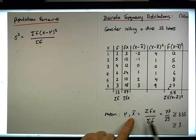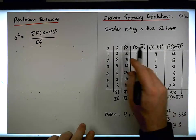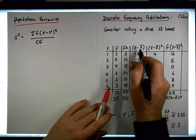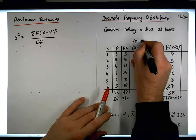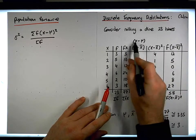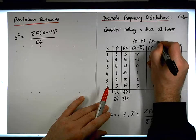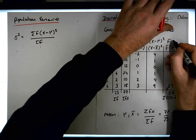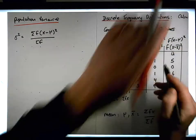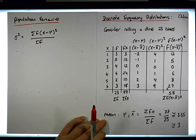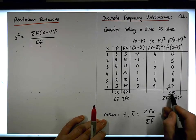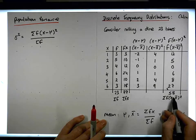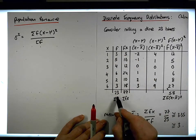x-bar is the same as mu, it's 3. So for the population, this particular column here would be relabeled as x minus mu, and this would be x minus mu squared, and this column would be labeled f times x minus mu squared — just a relabeling of the columns. We still end up with 58 for the sum of the frequencies times x minus the population mean squared, and we still end up with 23 for the sum of the frequencies.